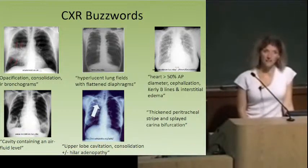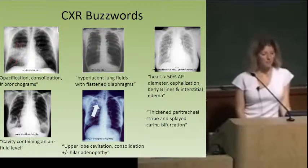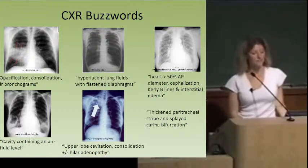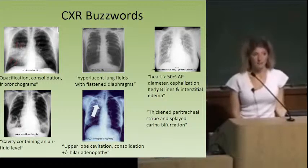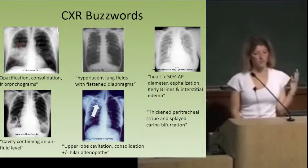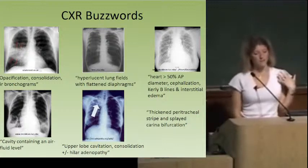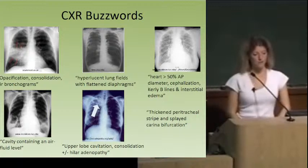The last picture is TB. They might describe upper lobe cavitation, consolidation, and hilar lymphadenopathy. The description in the question stem says there's a thickened peritracheal stripe and splayed carina bifurcation.